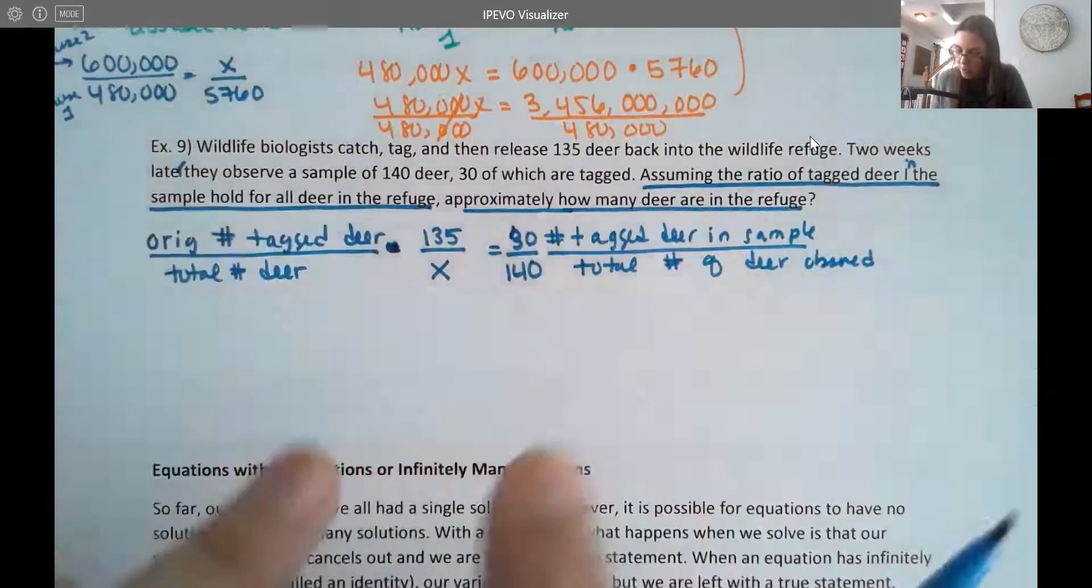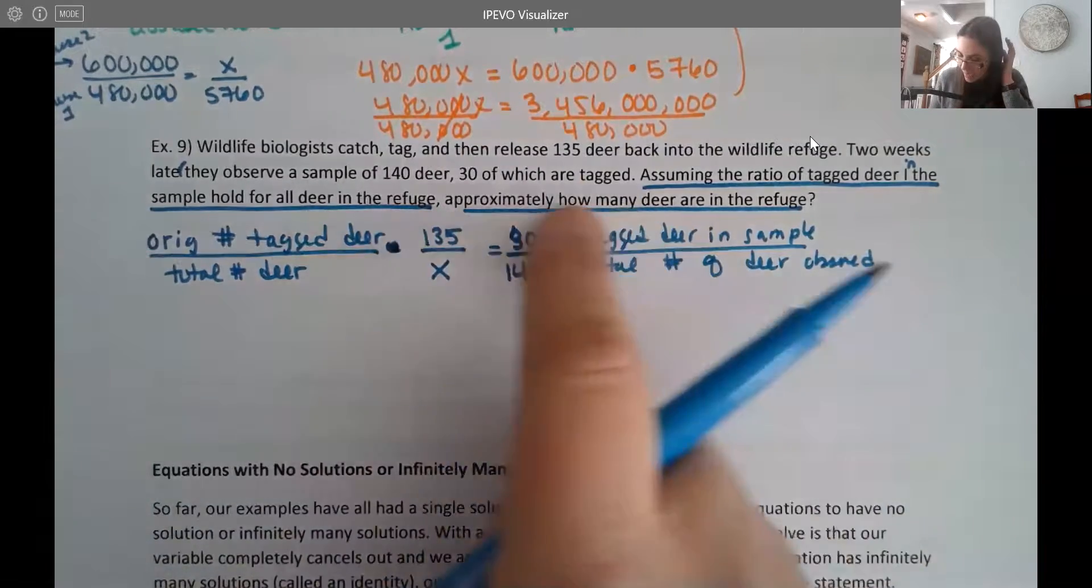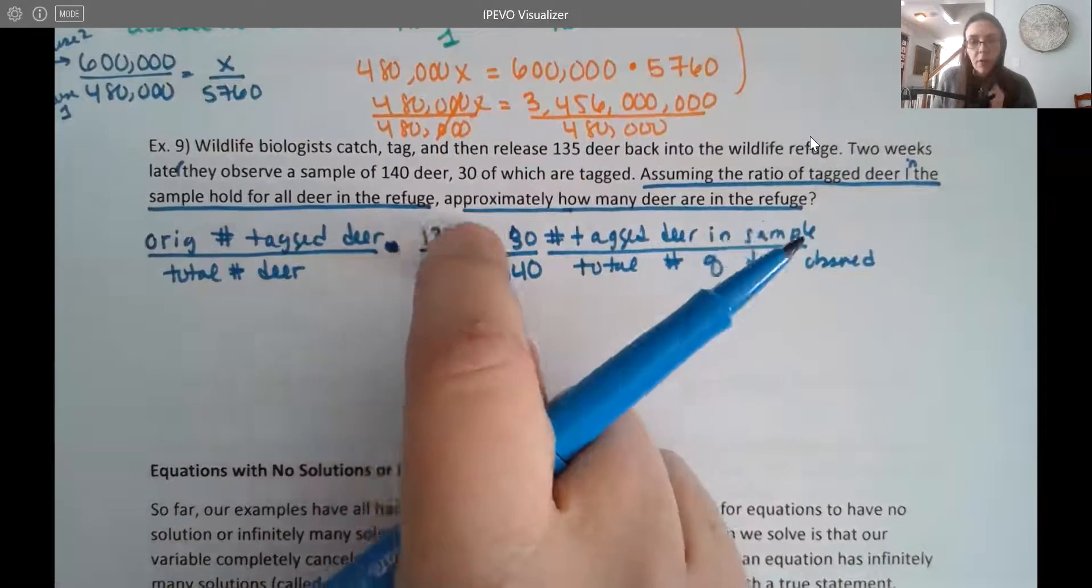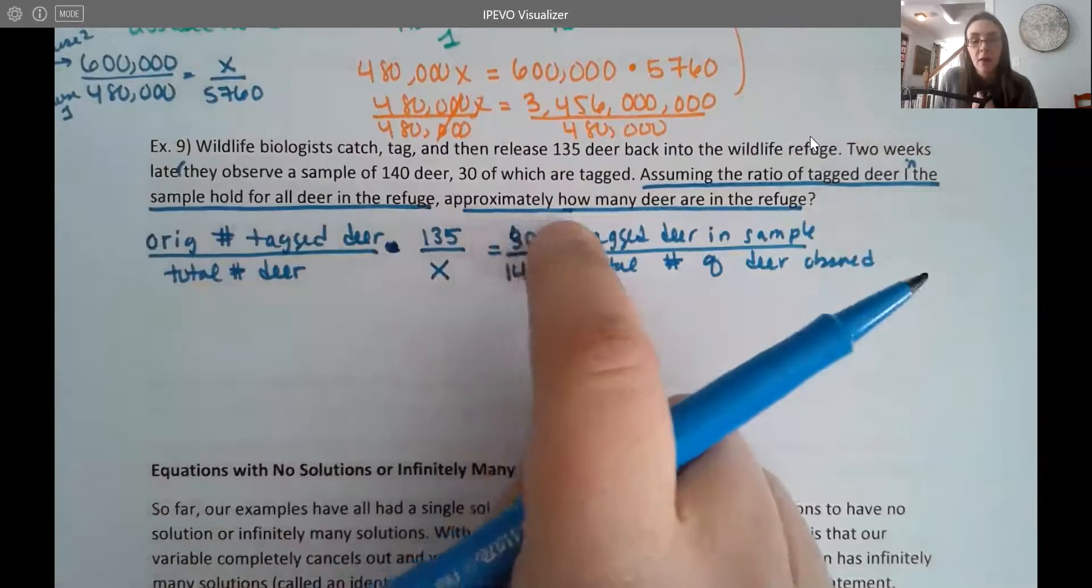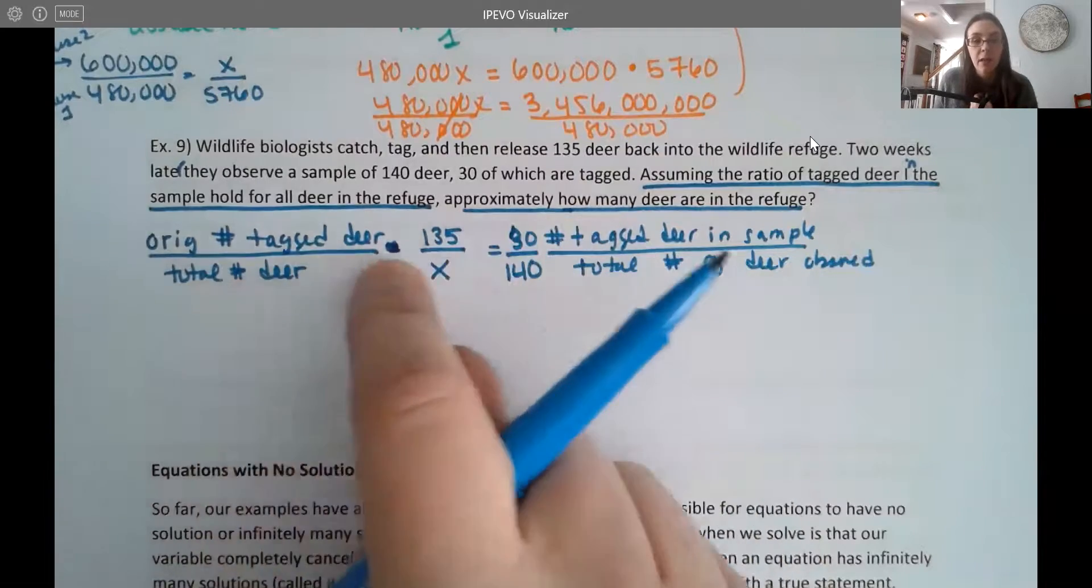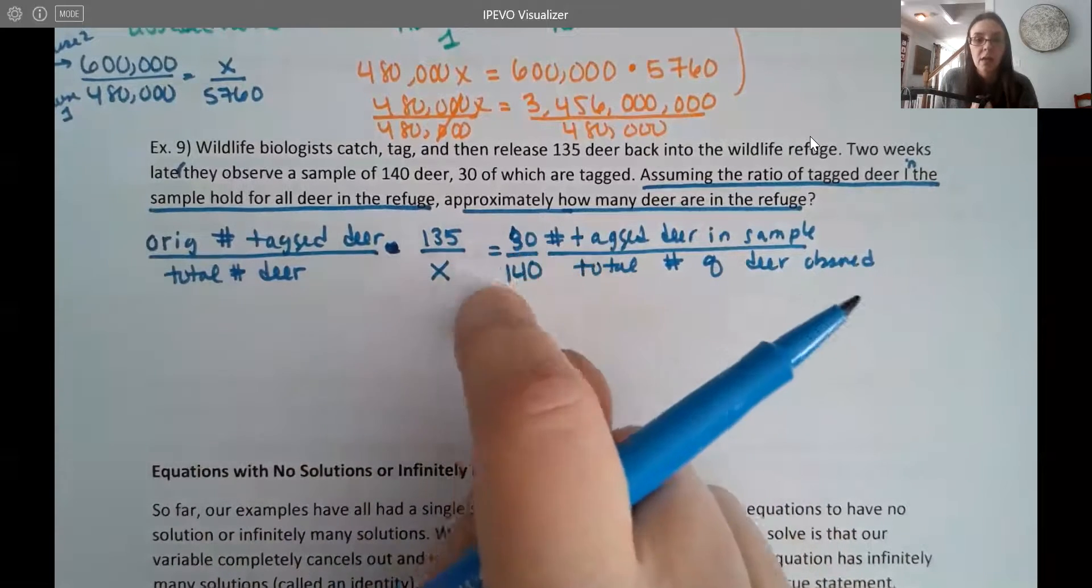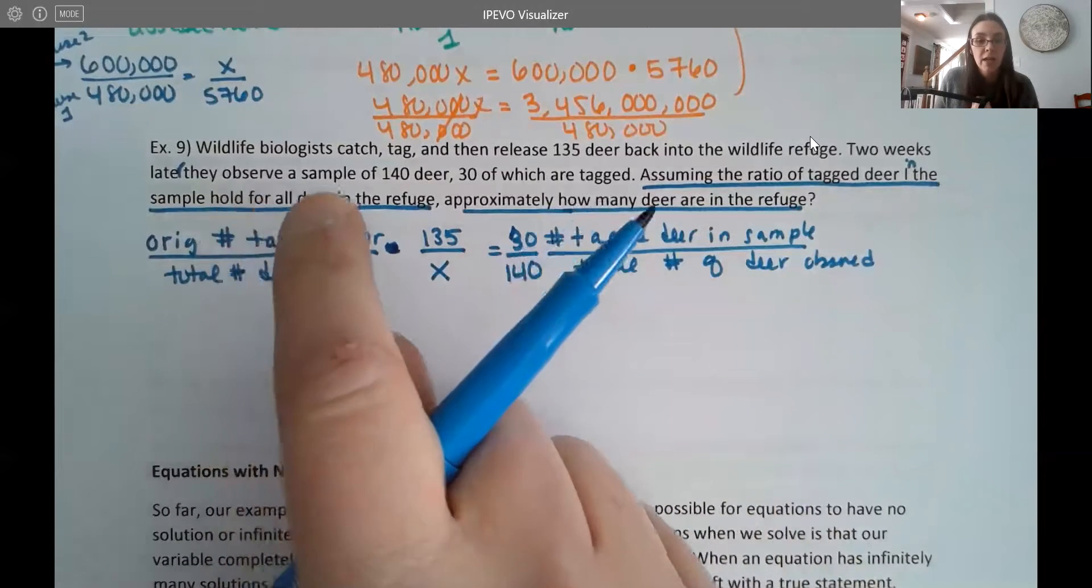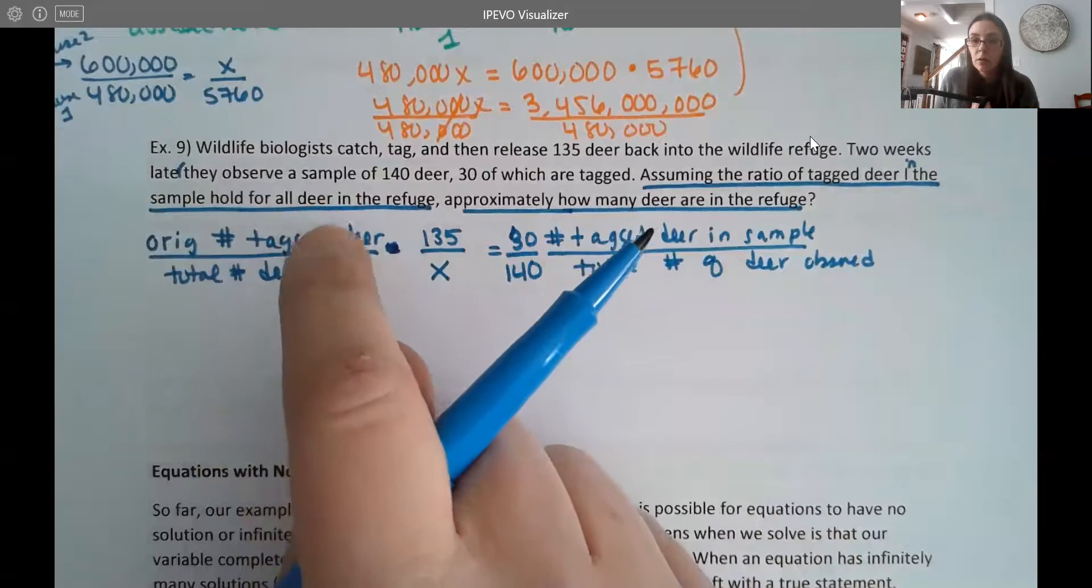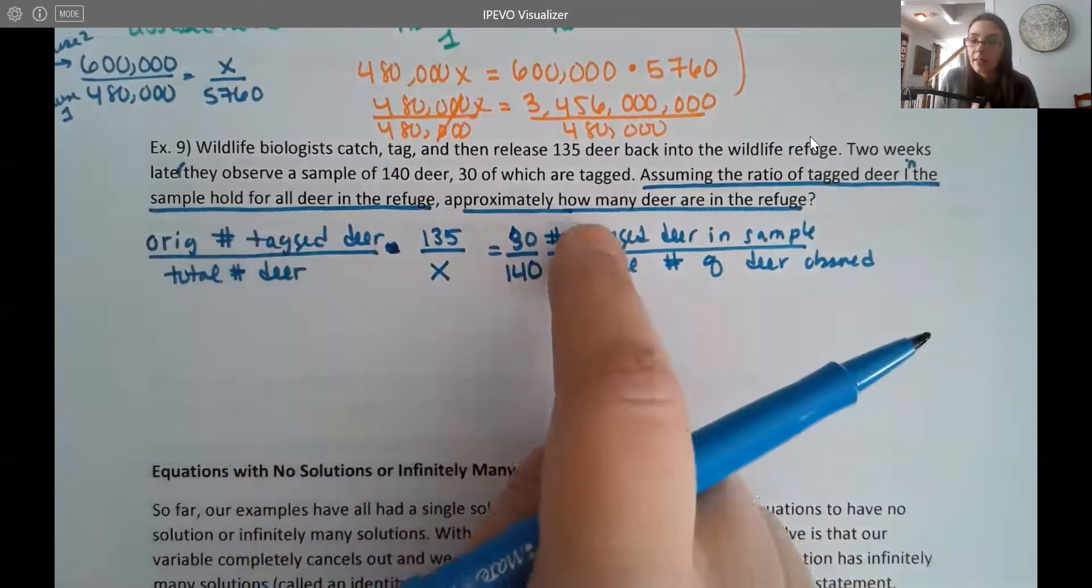They're looking at your original, sort of the original tagged on top, right? So we had 135 originally tagged, and then we collected 30 that are tagged now. And then we're comparing the totals on the bottom. So total deer in the whole park, which is the total deer collected. So we're kind of doing an idea of original to total. So original tag to total as our setup here.